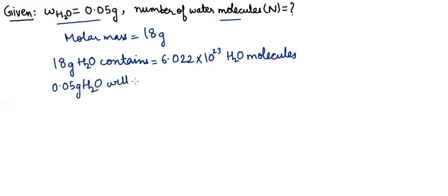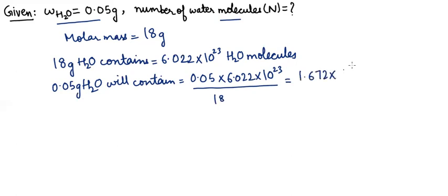0.05 multiplied by 6.022 times 10 raised to power 23, divided by 18. That is equal to 1.672 times 10 raised to power 21 molecules.